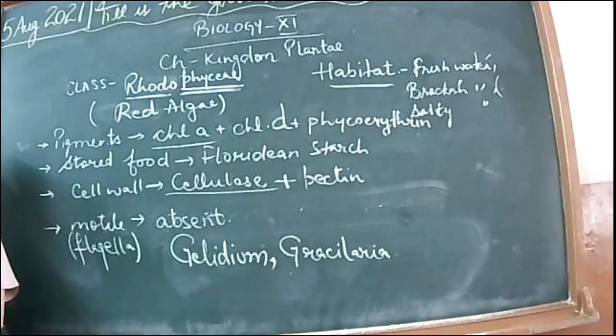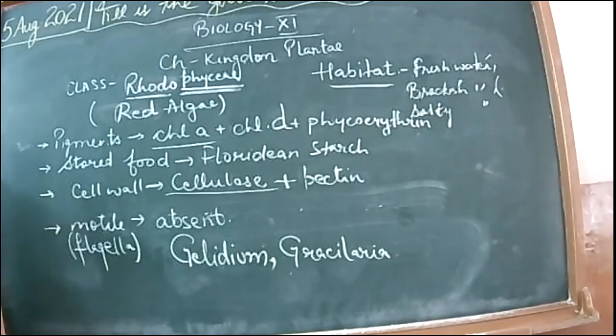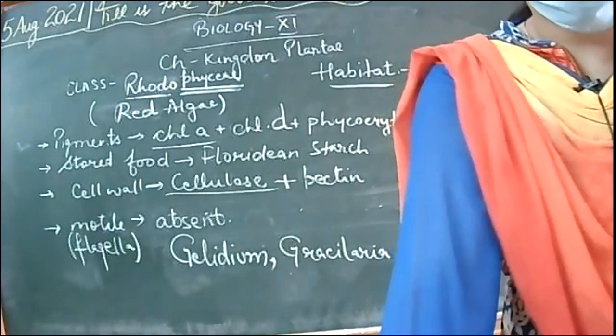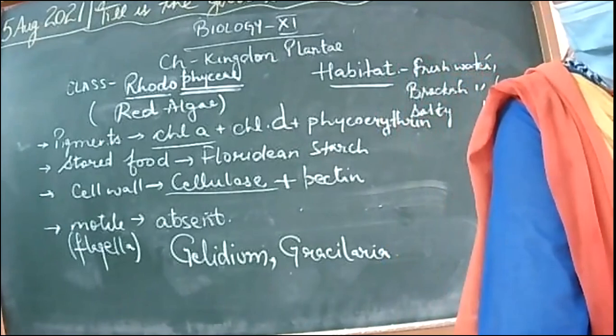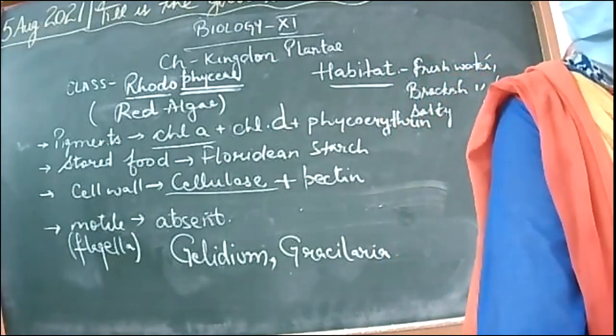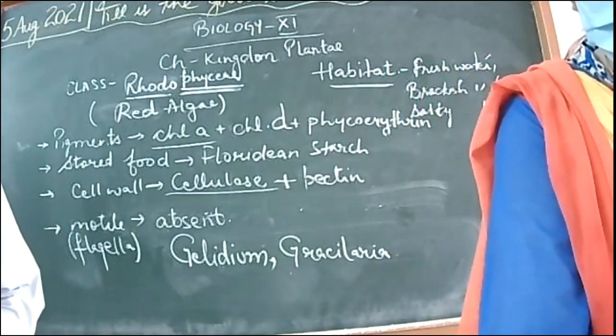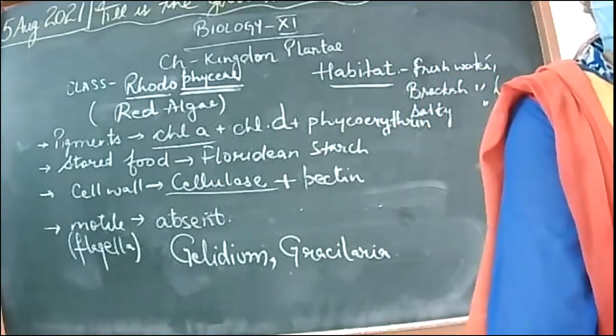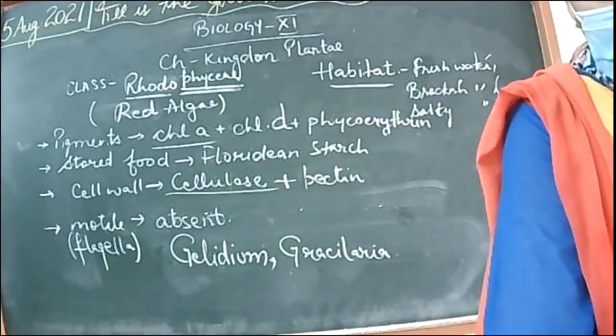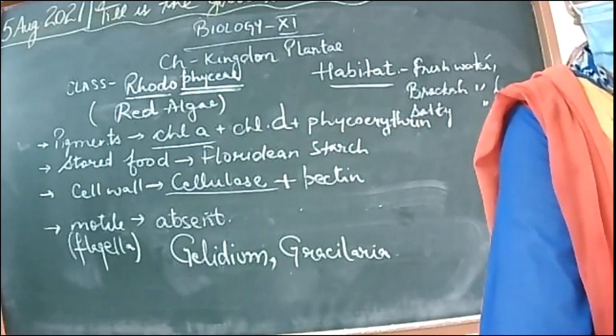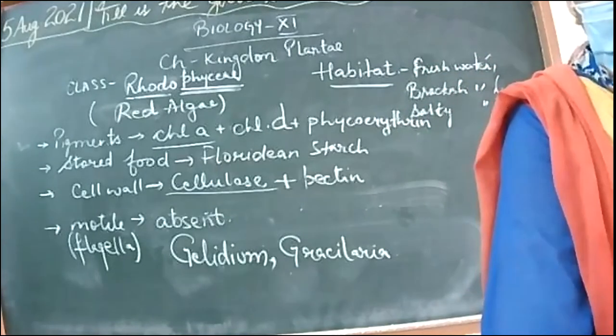Angiosperms have two groups: monocots and dicots. Monocots have only one seed leaf inside the seed coat, while dicots have two. The leaves of monocots are often long and narrow with veins in straight lines. These are the features of the differences between monocots and dicots - veins have parallel venation and everything that we have already studied.